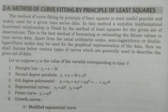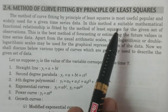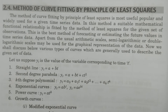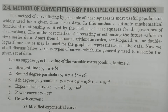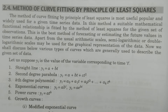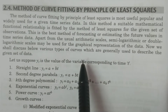For BSc Statistics students, in this class I explain the method of curve fitting by the principle of least squares. This is one very popular and most useful method of obtaining the trend. Trend means long-term fluctuations in a time series data. To identify the long-term fluctuations, long-term variations, or secular trend, this method is most popular and most useful.